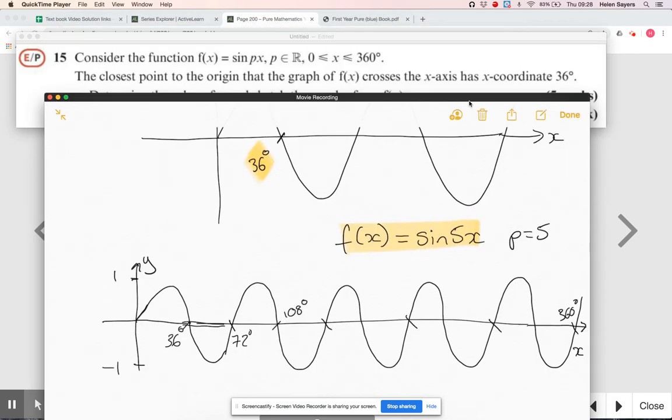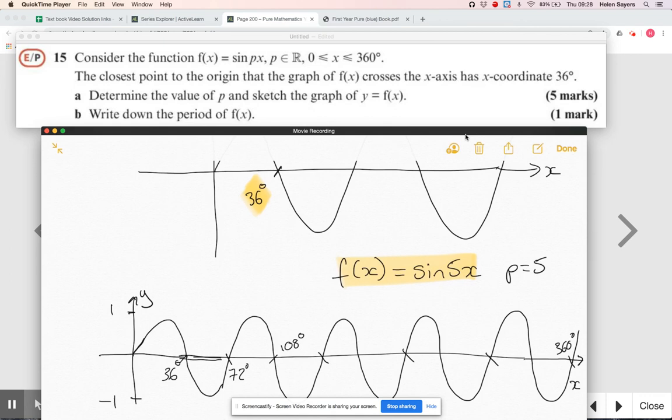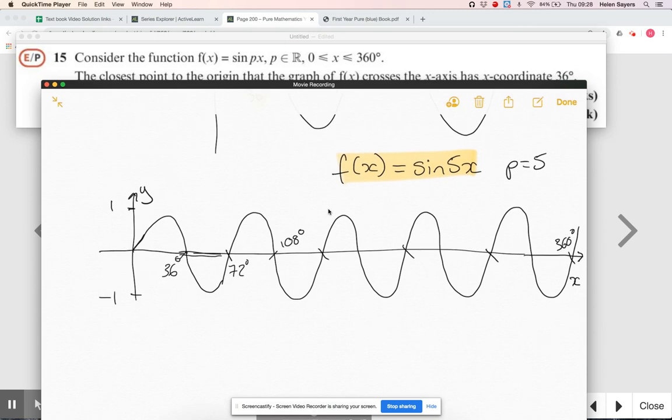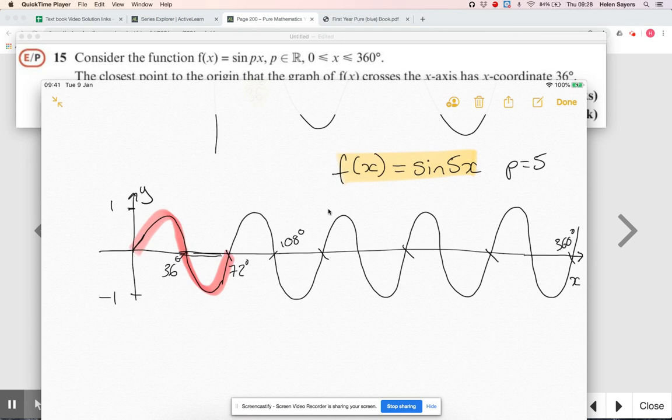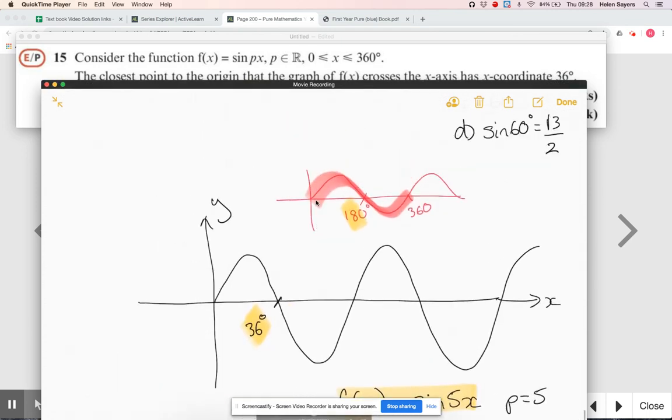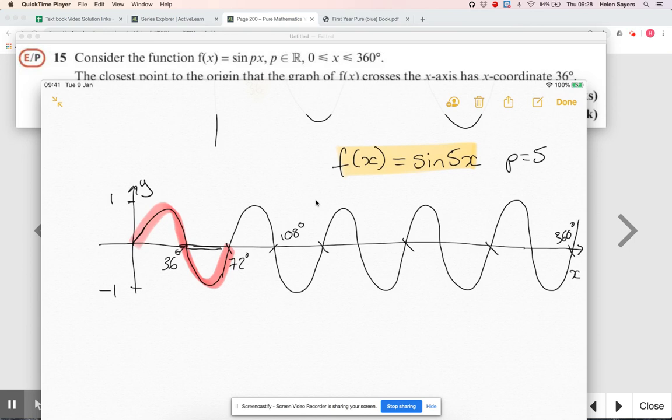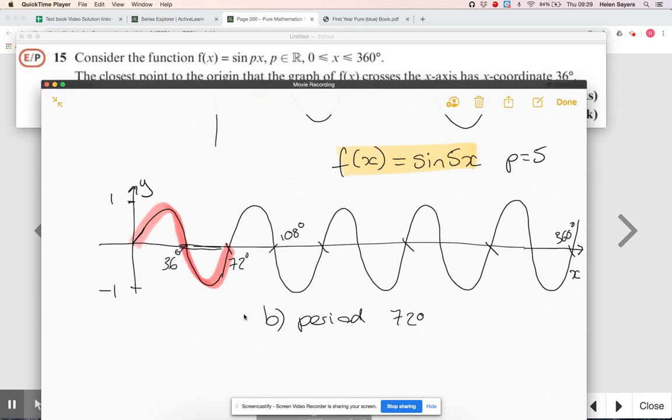That wasn't quite the whole question, was it. So that's A. Write down the period of f(x). The period is just going to be, how often does it start repeating? Normally the period of sine x is 360 degrees. We've squashed it in, so the period of our stretched graph is 72 degrees. And that's all that question.